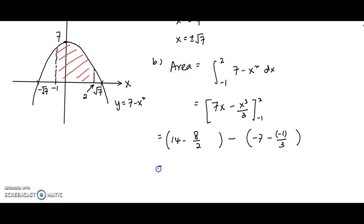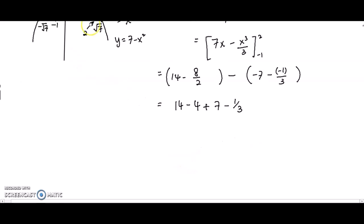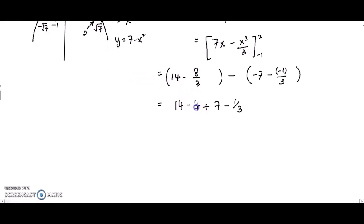Using a calculator, we calculate the final answer. Note this denominator has to be 3, giving 8 over 3 here. Finally, we get the answer 18 unit squared.